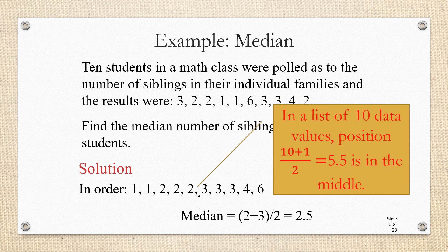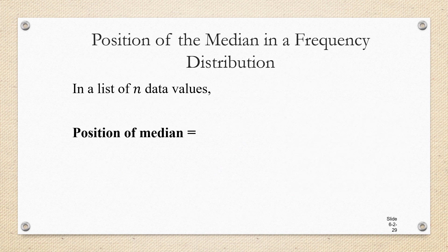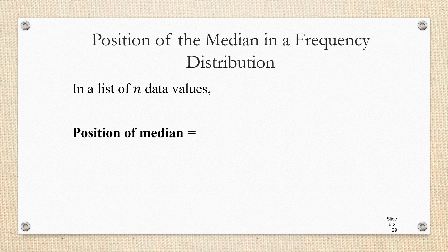Notice that in this list of 10 data values, we're looking at the 5 and a half position. You can get 5.5 by adding 10 plus 1 and dividing by 2, 10 being the number of data values. And this will work in general. In a list of n data values, the position of the median is always going to be n plus 1 over 2. Now remember, the number of data values is not always given to you.